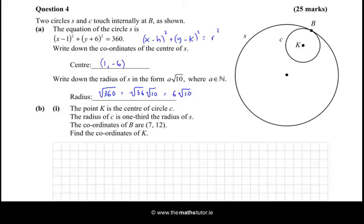Now, the point K is the centre of circle C. The radius of C is one-third the radius of S. So let's join up B and the centre of S. We can write in the centre of S, it's the point (1, -6). And we know that there's a ratio then. If KB is one-third of AB, then the ratio is 1 to 2. And we're told the coordinates of B are (7, 12), and we're asked to find the coordinates of K.